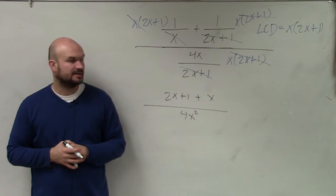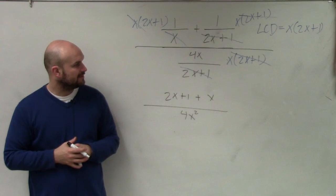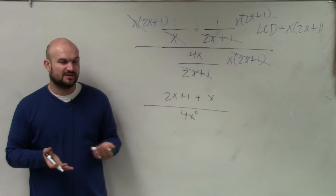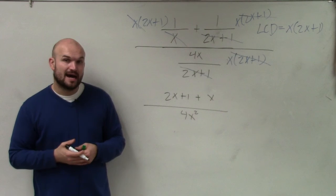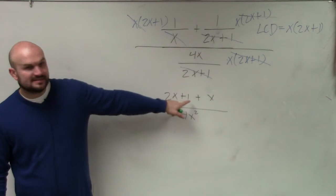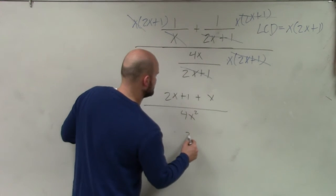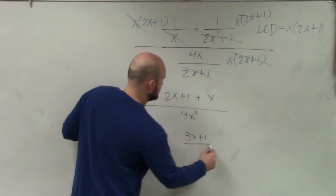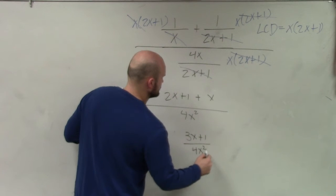You guys see that? See what I did? What happened? Anybody have any questions with this so far? We still can simplify it. But now, I can simplify up here, right? So I can say this becomes 3x plus 1 divided by 4x squared.